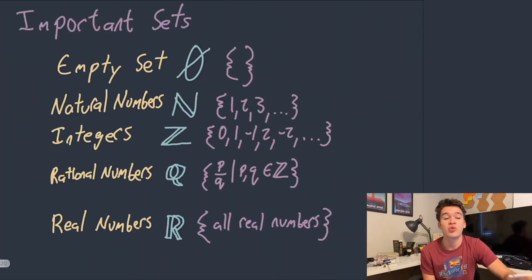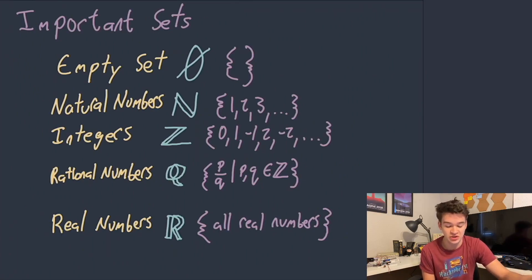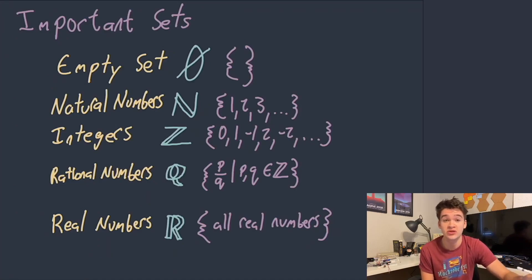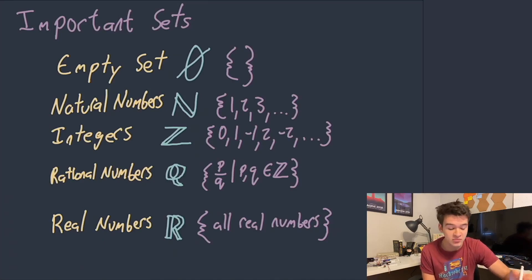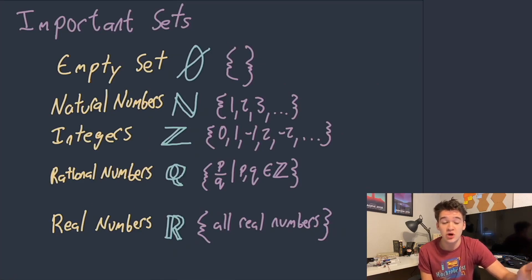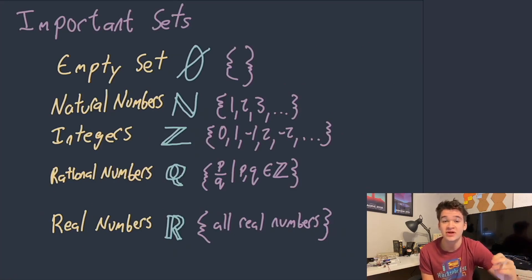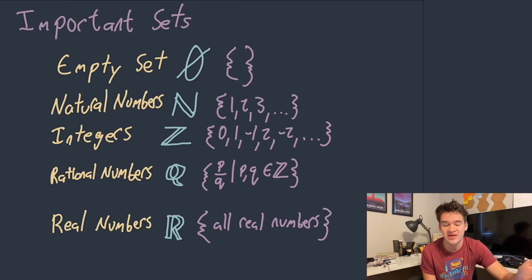The next thing we're going to talk about is some of the important sets that exist. The first and most basic is the empty set, which is just a set with no members in it. Then there are different groupings of numbers that come up a lot. The first is natural numbers — your counting numbers: one, two, three, and on. Then you have integers, which is all positive and negative numbers and zero. Then rational numbers, which is anything you can form as a ratio between two integers. And finally, real numbers, which is the set of all real numbers — everything with decimals and things like that.